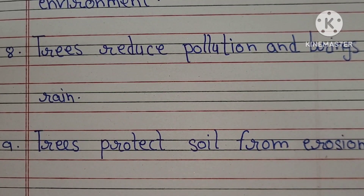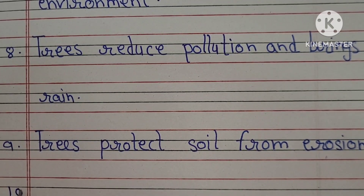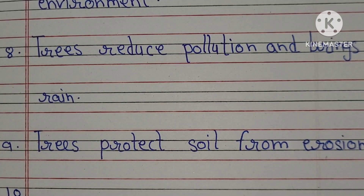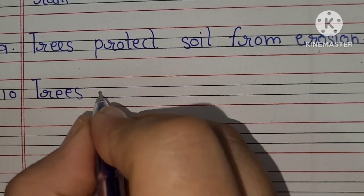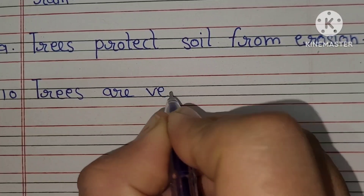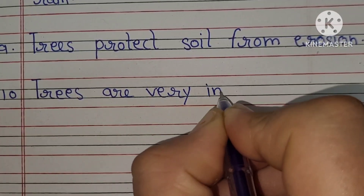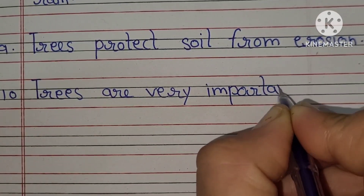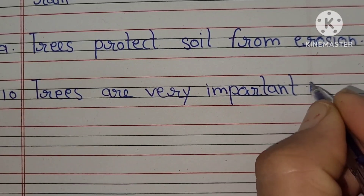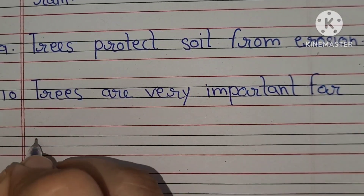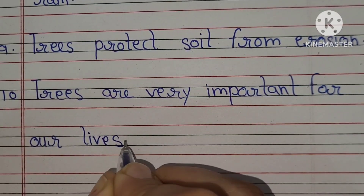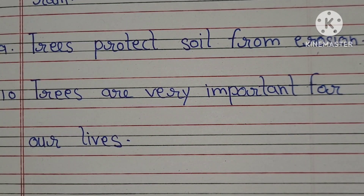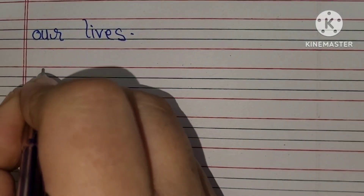Number nine: Trees protect soil from erosion. Number ten: Trees are very important for our lives.